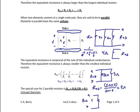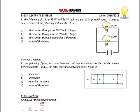This concludes our review of how to find parallel and series equivalent resistance. Now let's look at some concept questions related to resistance, power, voltage, and current. In the following circuit we have a 75 watt and a 50 watt light bulb placed in parallel across a voltage source. Note that a battery symbol represents a voltage source — the longer line represents the positive and the shorter line the negative.